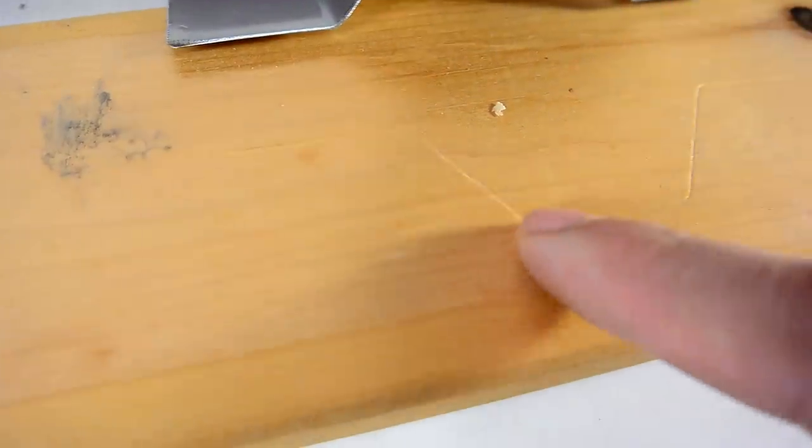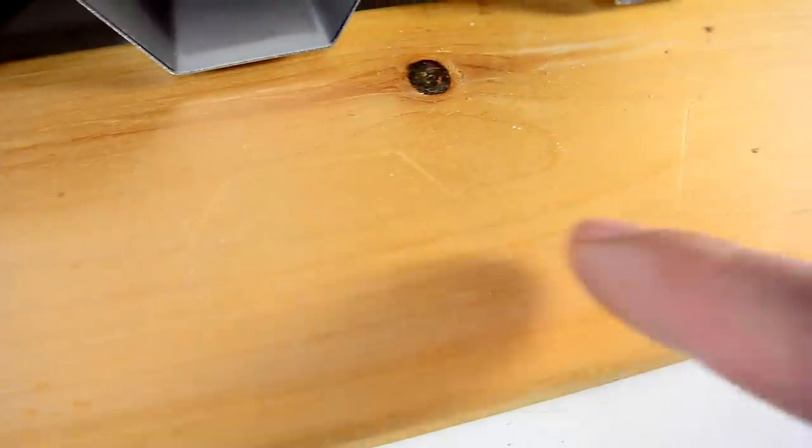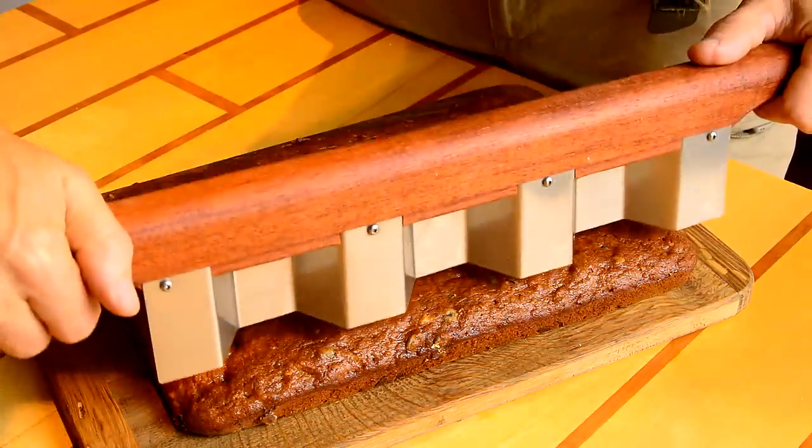I was able to press a visible line into the wood along most of it, except for this gap here. But I think it'll be okay for cake.